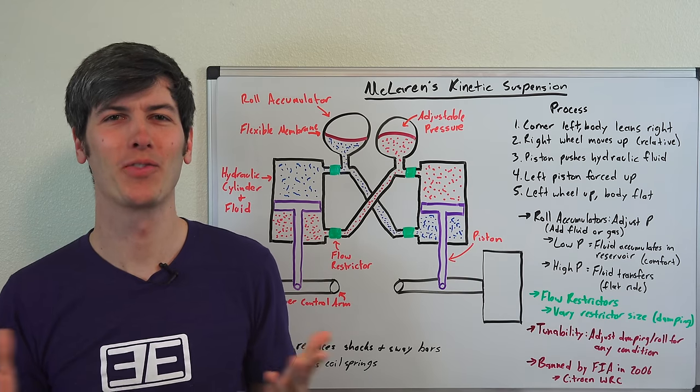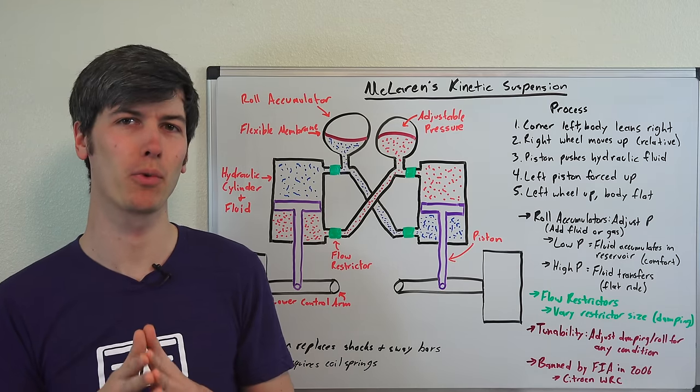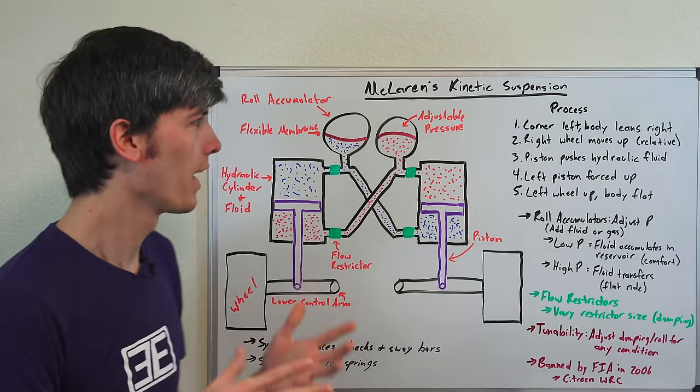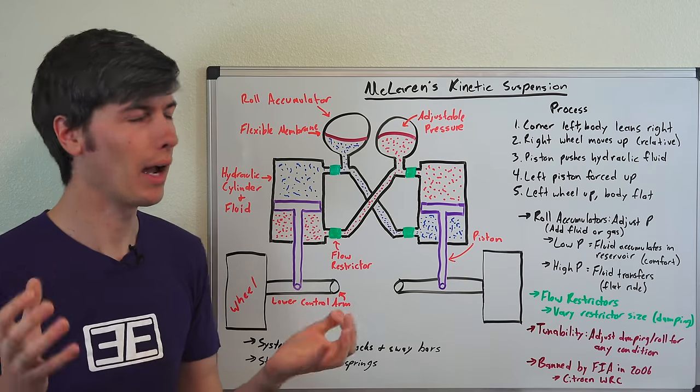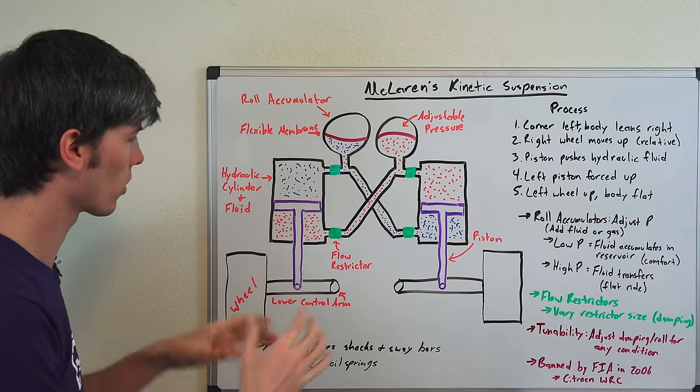Hello everyone and welcome. In this video we're going to be talking about a suspension design that McLaren uses in the MP4-12C. They also use a similar setup in the P1, and this setup allows them to get away without using an anti-roll bar. So how does this design work?